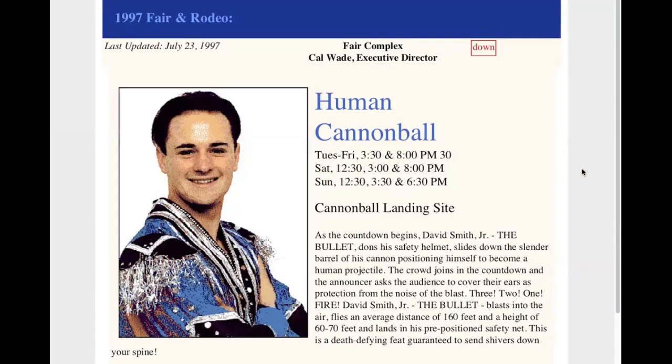Here's where I got the problem. I found this ad online for David Smith Jr., the human cannonball. He calls himself the bullet and he's going to be shot out of a cannon at a county fair. It says he blasts into the air, flies an average distance of 160 feet and a height of 60 to 70 feet and lands in his pre-positioned safety net.